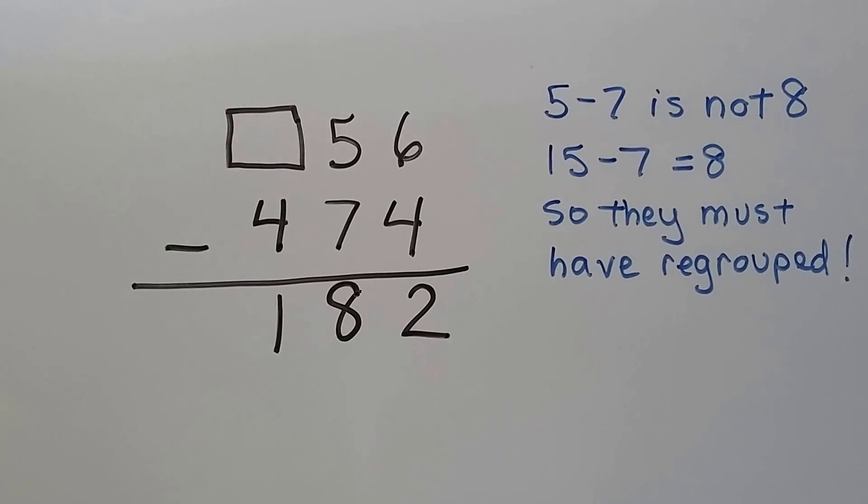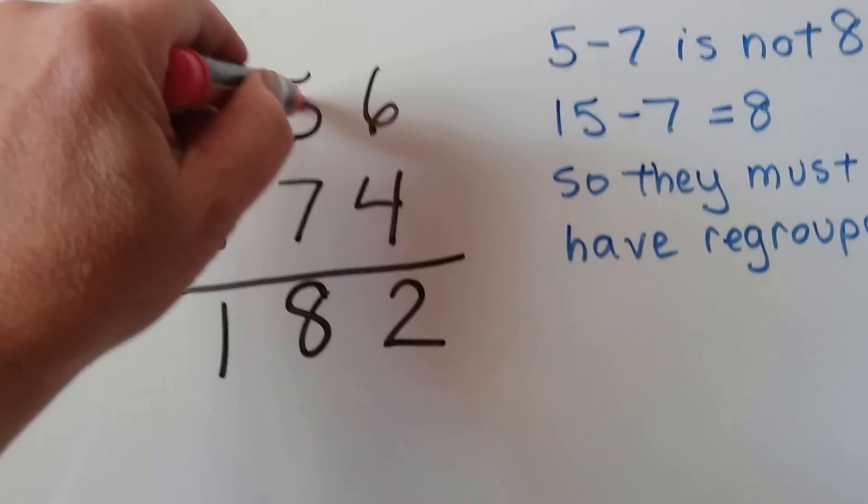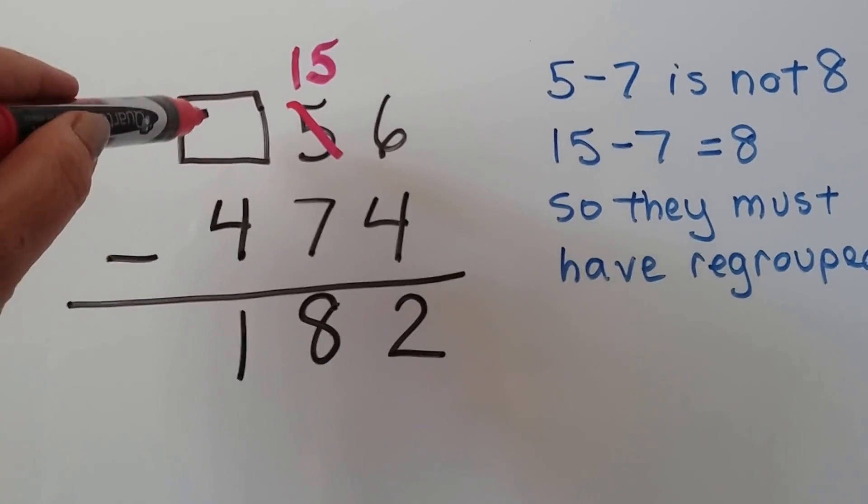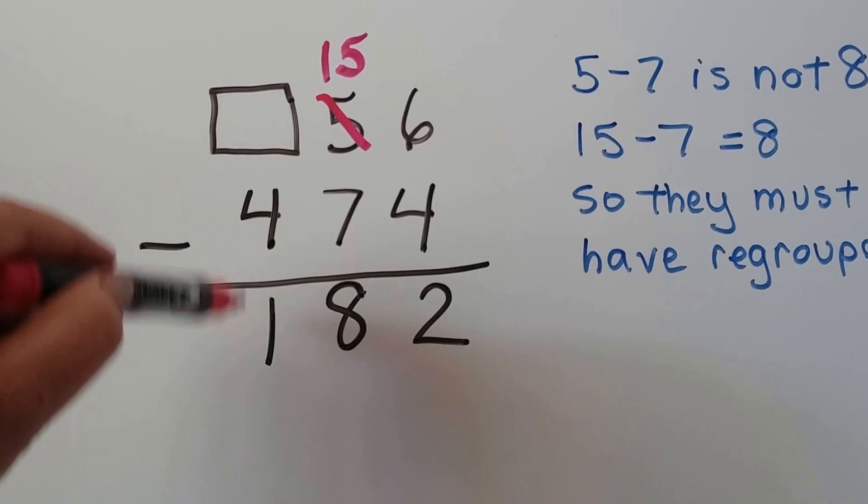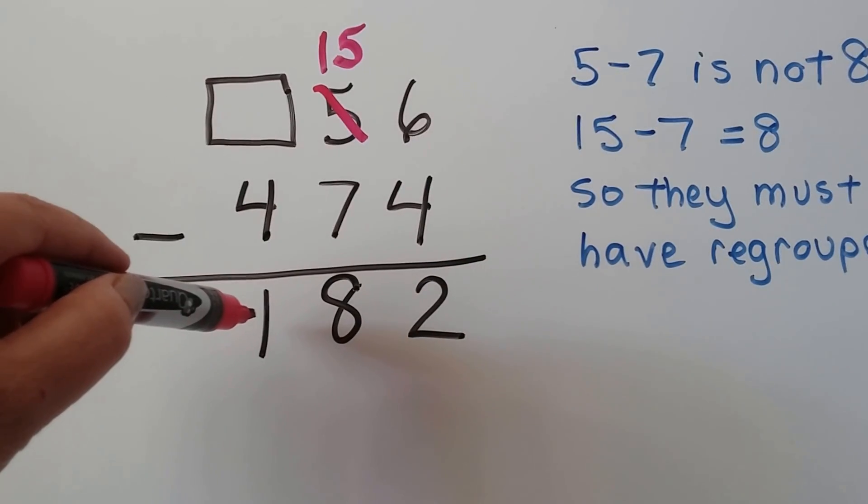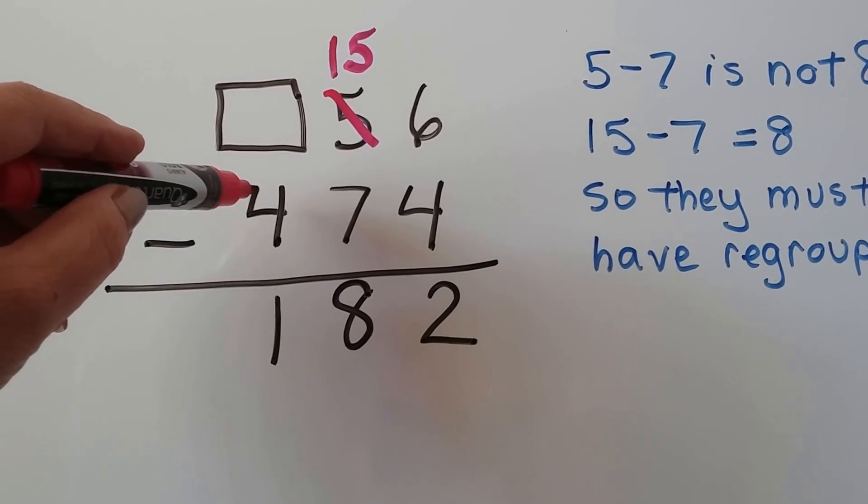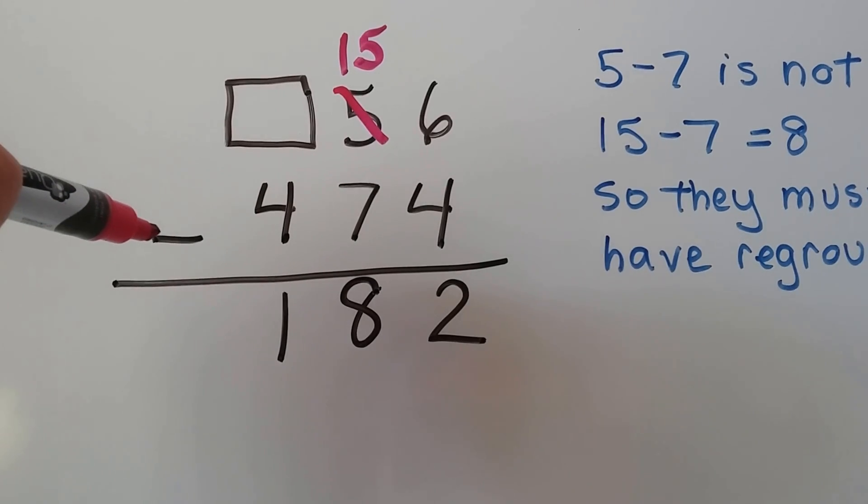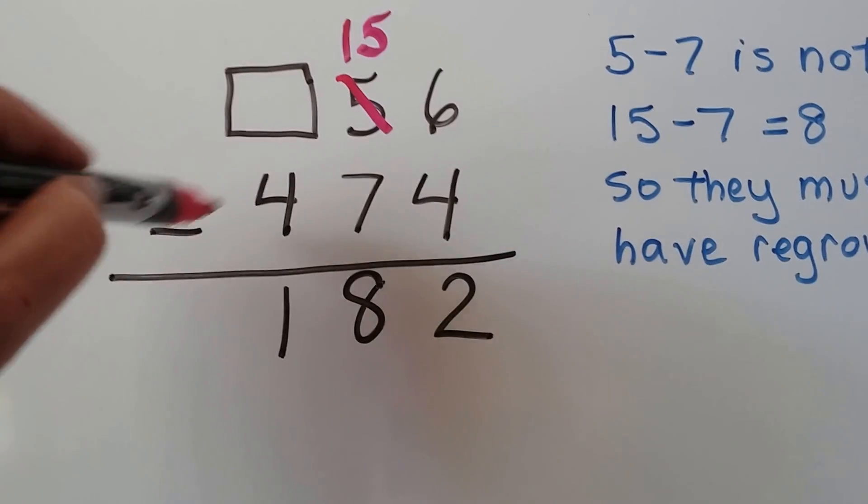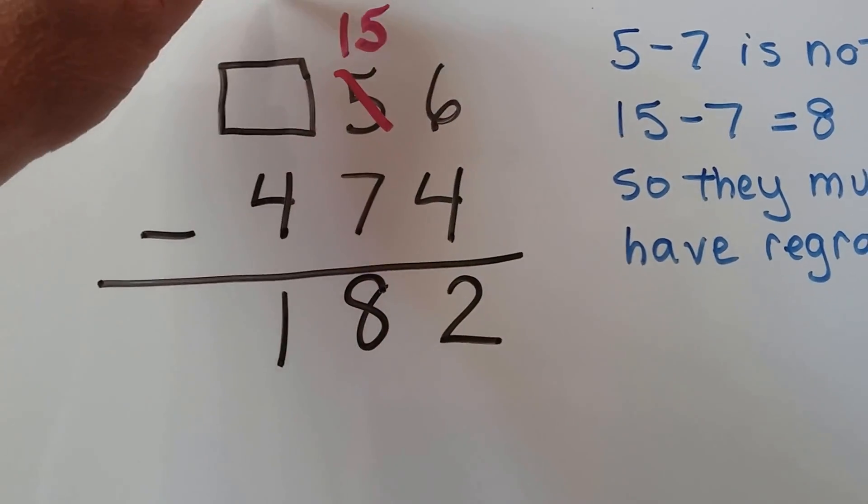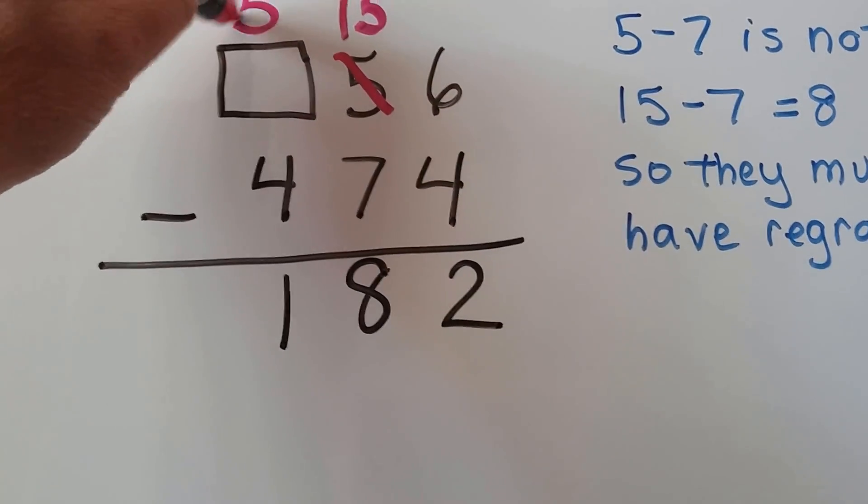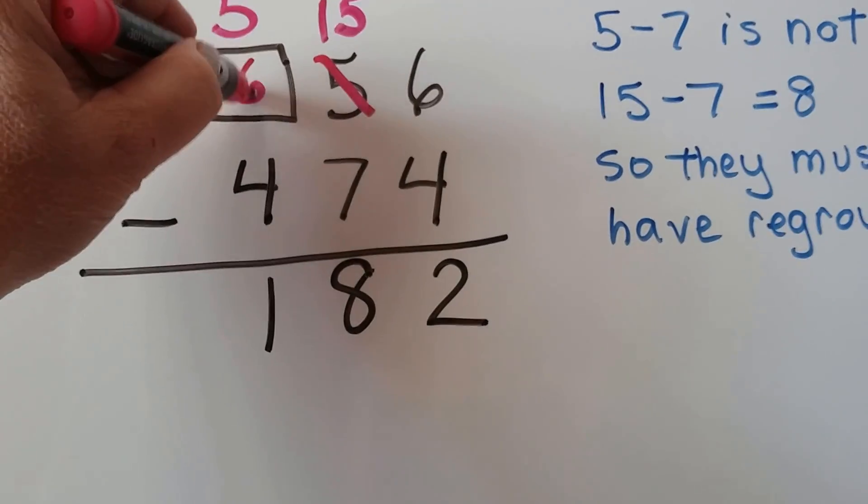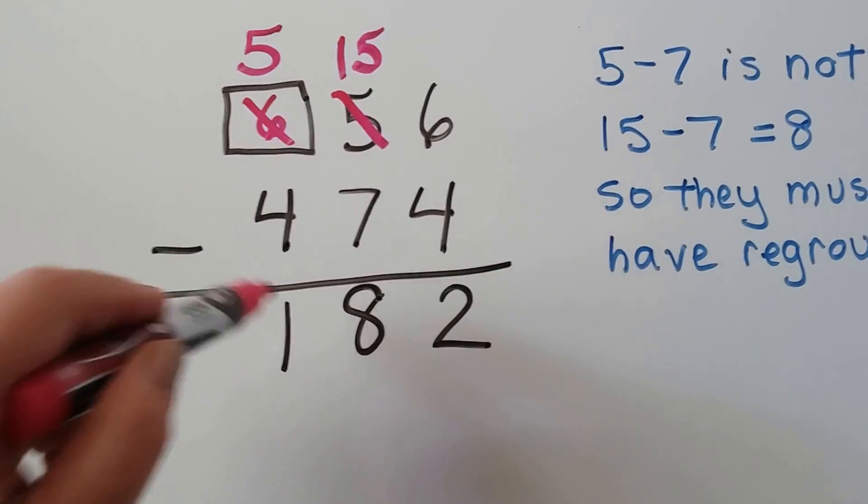They must have regrouped. That means this became a 15. And the only way for it to become a 15 is if it took a number from the hundreds place. But look, they took 4 away and it made a 1. If you took 4 away from a number and it equaled 1, what number could be here? A 5. 5 take away 4 is 1. So that means this became a 5. So what was it before we regrouped to the tens place? It had to have been a 6. And they regrouped it to a 5.